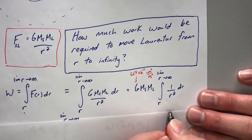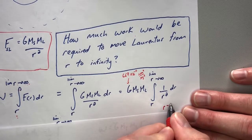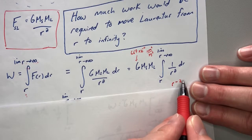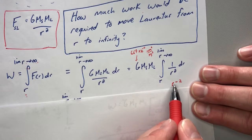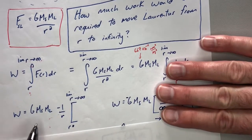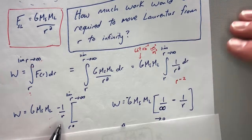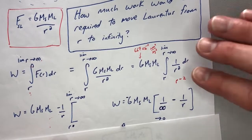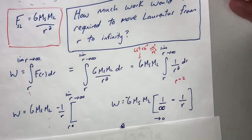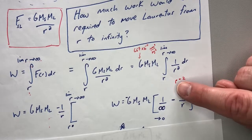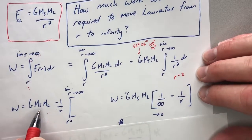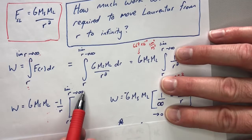I prefer to write 1 over r squared as r to the negative 2 power. Using the power rule, you raise the power from negative 2 to negative 1 and divide by negative 1. That gives you r to the negative 1 with a negative out front, which I rewrote as negative 1 over r. Don't forget the constant out front. On the AP test, if you're having trouble with the calculus, you can assume the integral result and work through to get your answer.